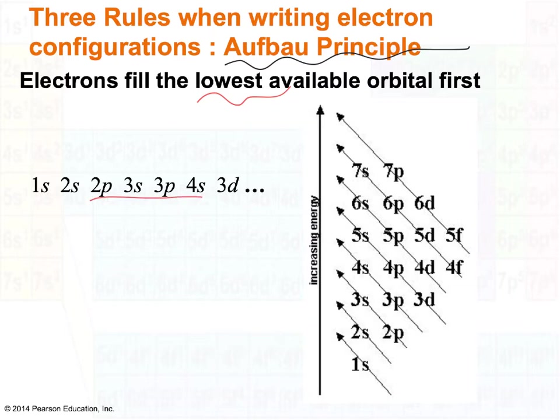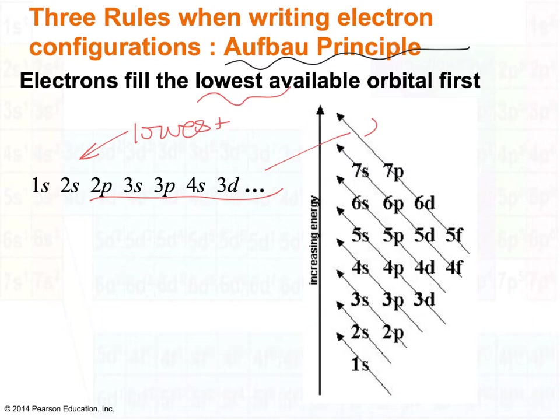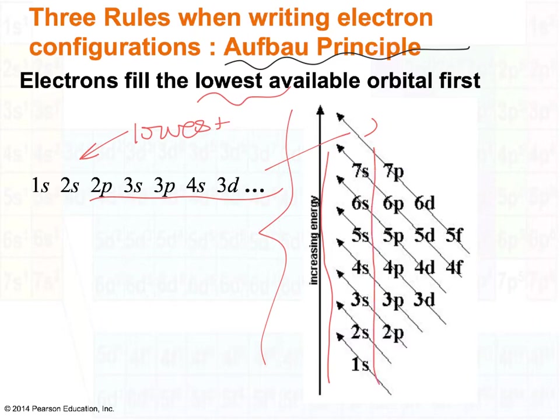You either want to memorize the order of energy levels — starting with 1s as the lowest energy — or use a tool called the Aufbau Diagram. To use it, write the S orbitals all to the left in a vertical column starting with 1, then skip a space and put all the P orbitals beginning with 2p straight up, skip a space again for the D orbitals, then skip again for the F orbitals.